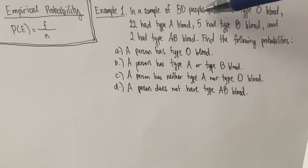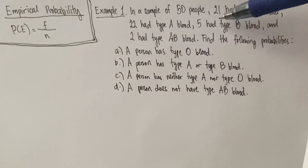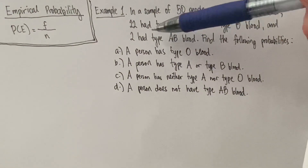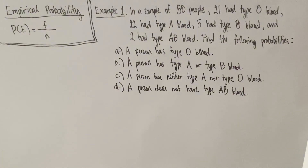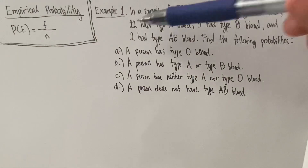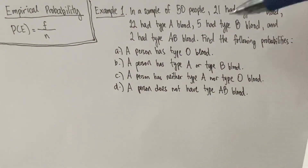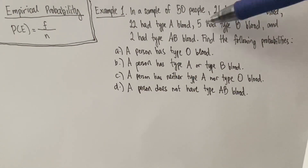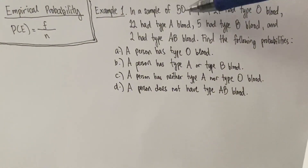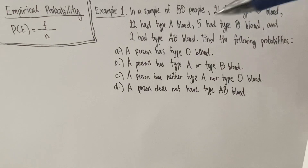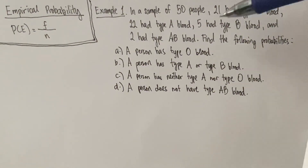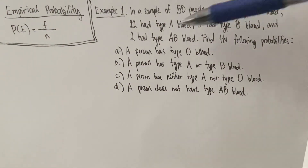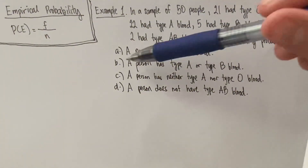Let's have an example. In a sample of 50 people, 21 had type O blood, 22 had type A blood, 5 had type B blood, and 2 had type AB blood. You can verify: 21 + 22 = 43, plus 5 = 48, plus 2 = 50. That checks out — we have all four blood types accounted for.